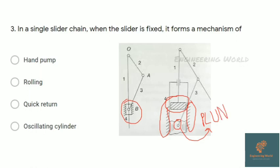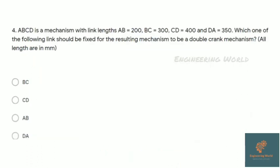Guys, we are also launching GATE IES lecture series based on classroom coaching notes, so please subscribe the channel and support us. Next question: ABCD is a mechanism with link lengths AB=200, BC=300, CD=400, and DA=350. Which link should be fixed for the resulting mechanism to be a double crank mechanism? It is a Grashof mechanism.